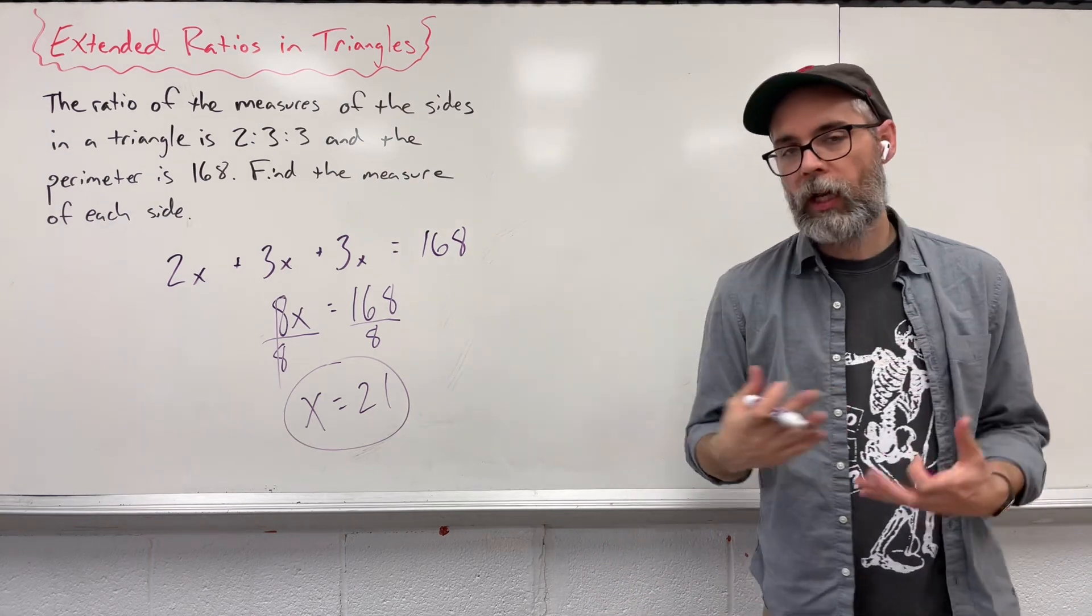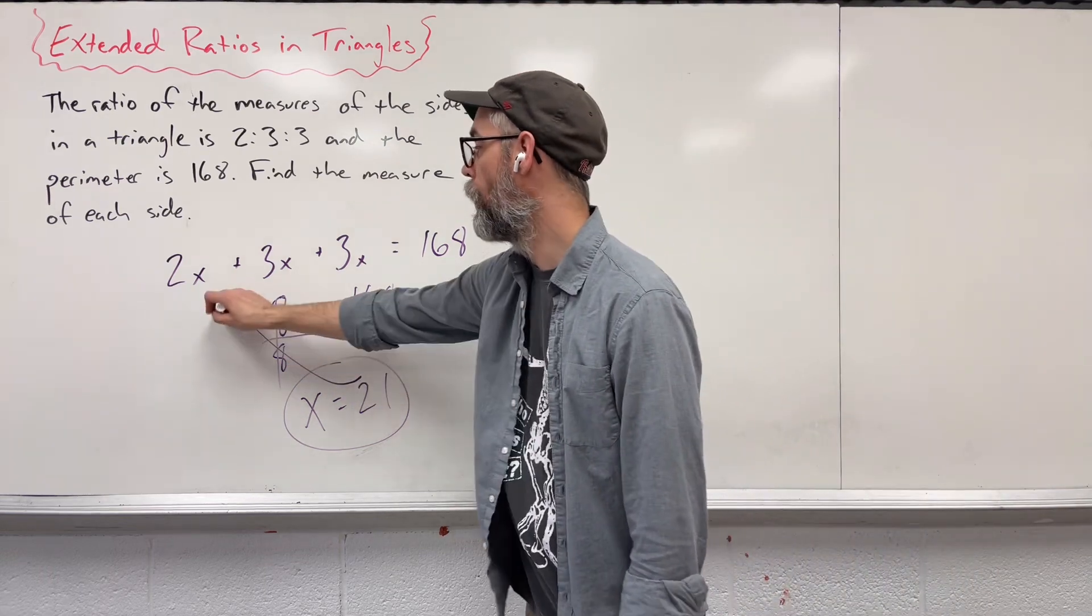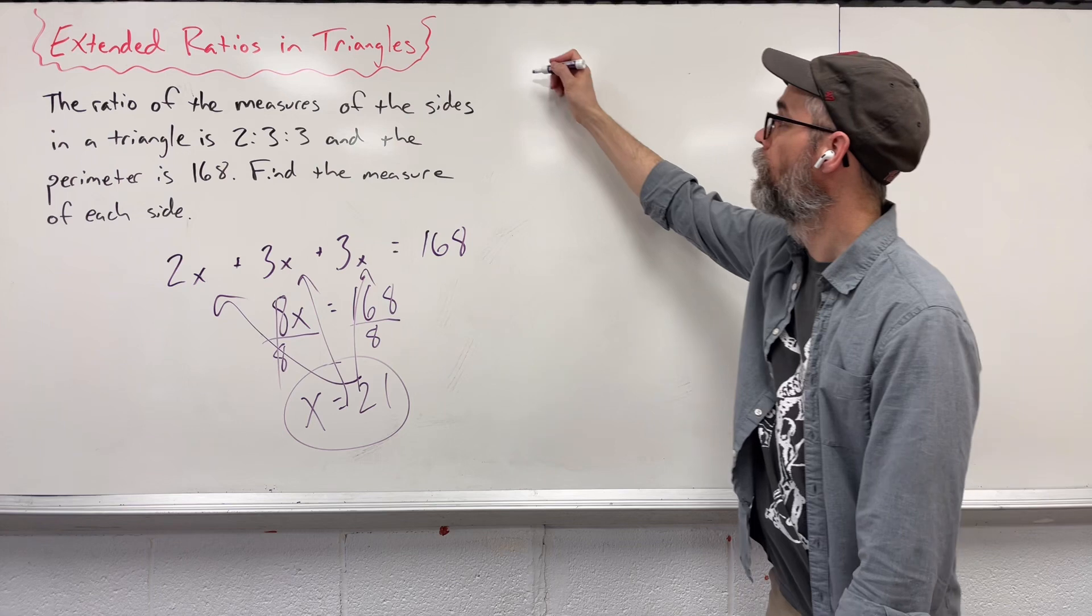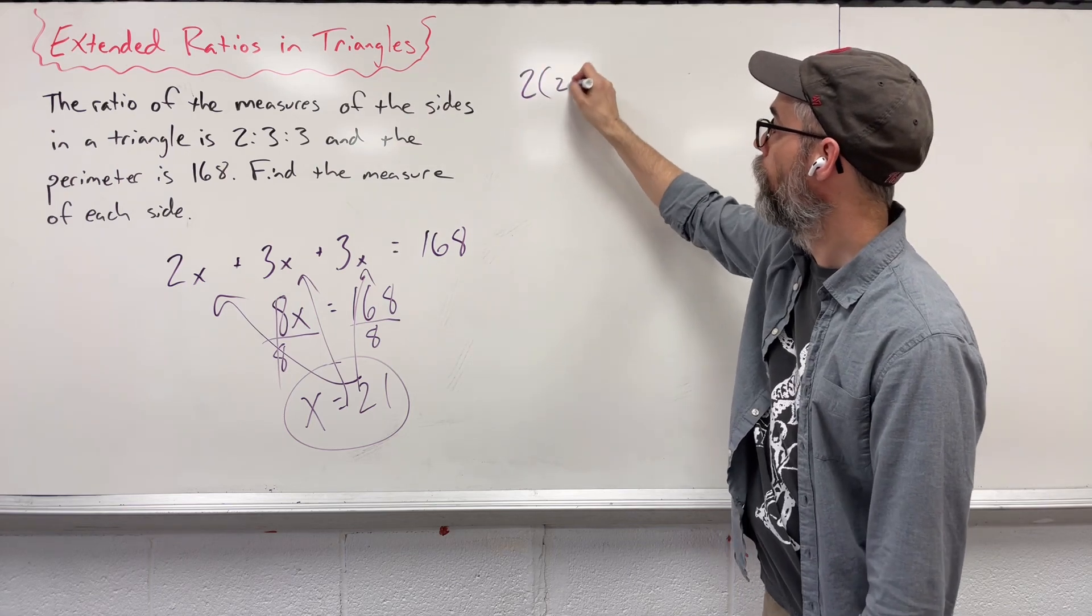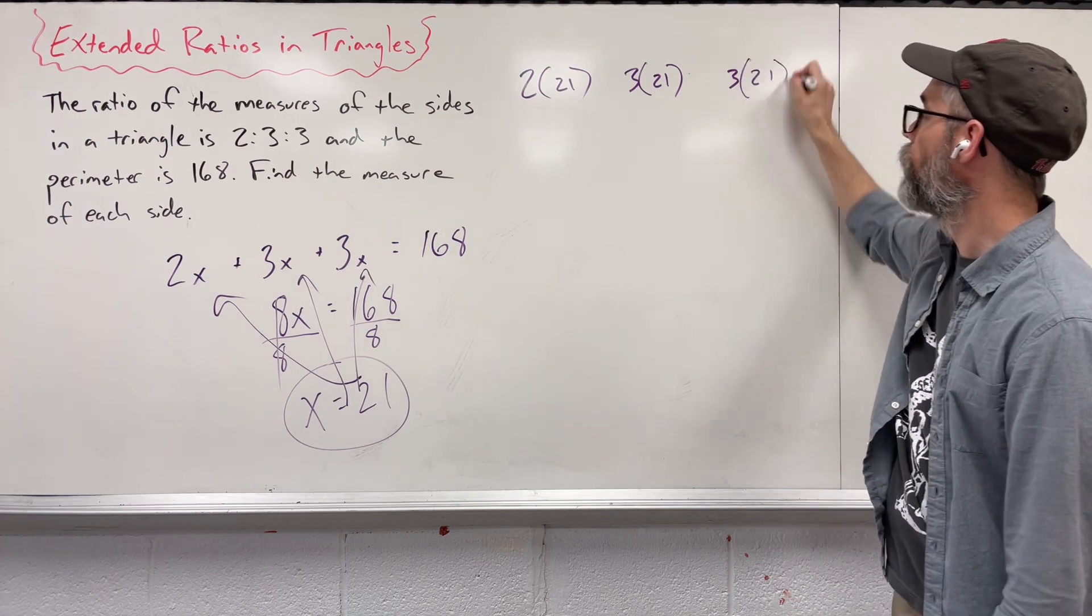Okay, so we don't care what the value of x is. We want to know what the measure of each side is. So I want to take this 21 and plug it back in for x for all of these. So we're going to get 2 times 21, 3 times 21, and 3 times 21 again.